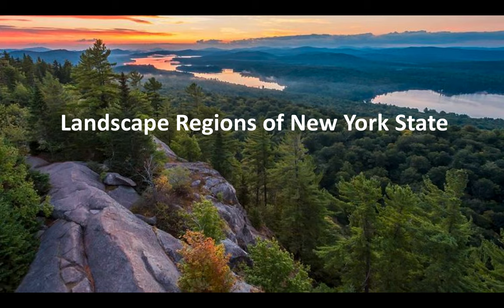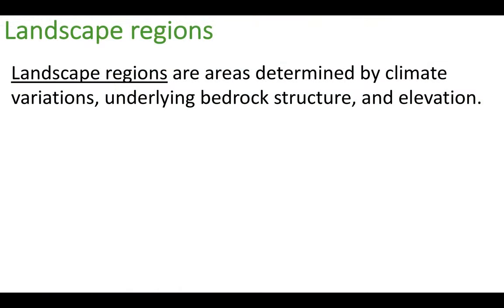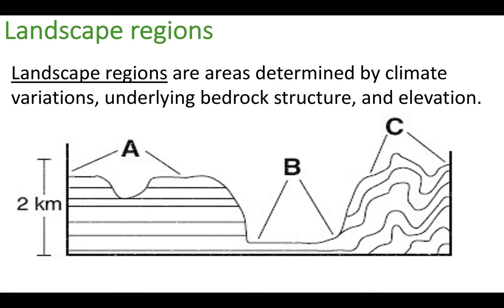In this video we're going to discuss different landscape regions that make up the state of New York. A landscape region is an area determined by the climate, the underlying bedrock structure, and the elevation. There are three basic types of landscape regions we're going to discuss, and all three can be found in New York State. The first is called a plateau.